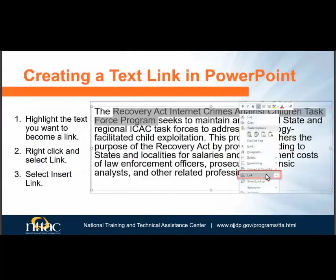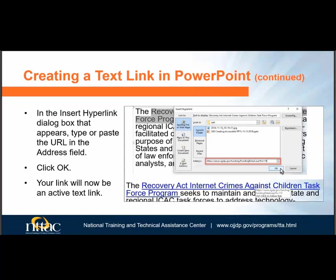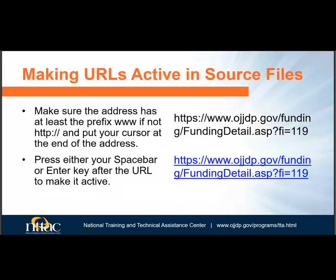How do you create a text link in PowerPoint? Creating a link out of text is relatively easy. Highlight the text you want to be a link, right-click and select Link, then Insert Link. A dialog box will appear. Type or paste your link in the web address field at the bottom of the dialog box and press OK. Your link will now be an active text link. To make a URL active, simply press space or Enter after your properly formatted URL and it will become an active link.